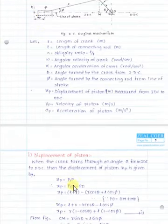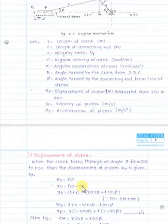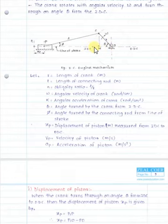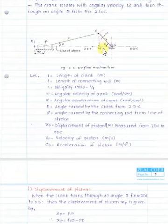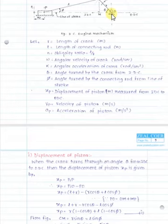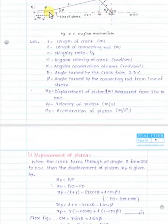We can write: P1P = P1O − PO. To find P1O, when the crank OC is at IDC, the point C is at the IDC position. OC is the crank length r, and the distance from C to P1 is the connecting rod length l. So OP1 = r + l, meaning P1O = l + r. Now we need to find PO, which equals OM + MP, so PO = OM + MP.